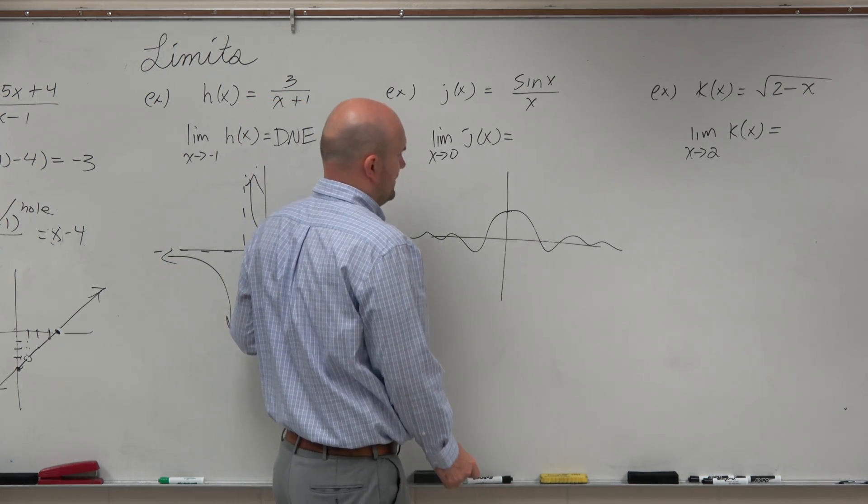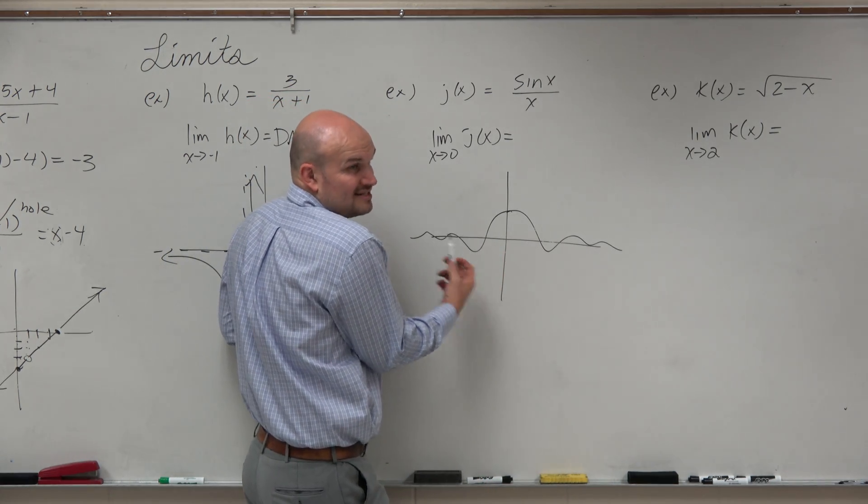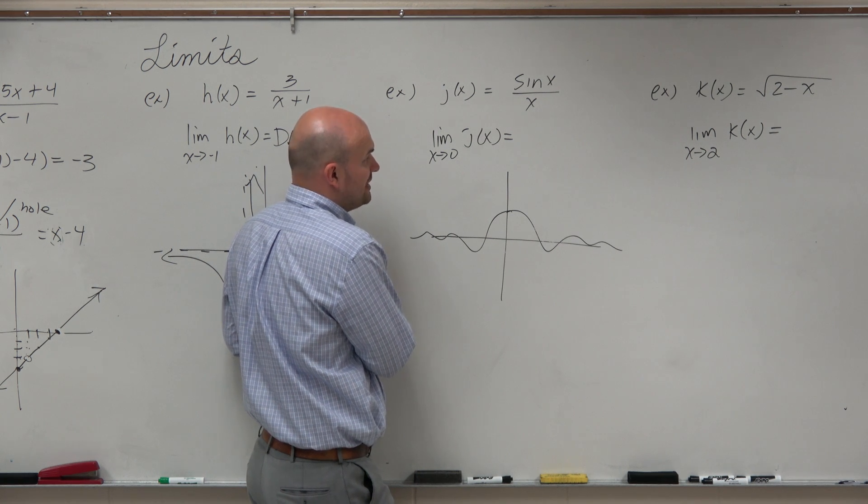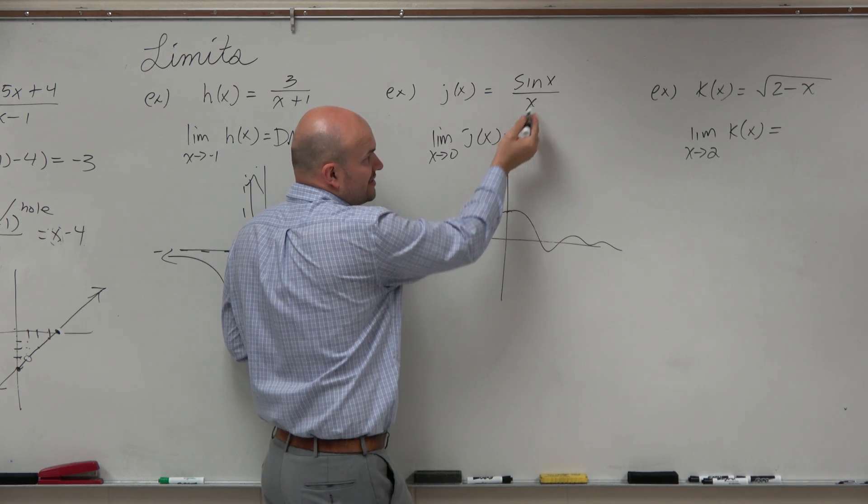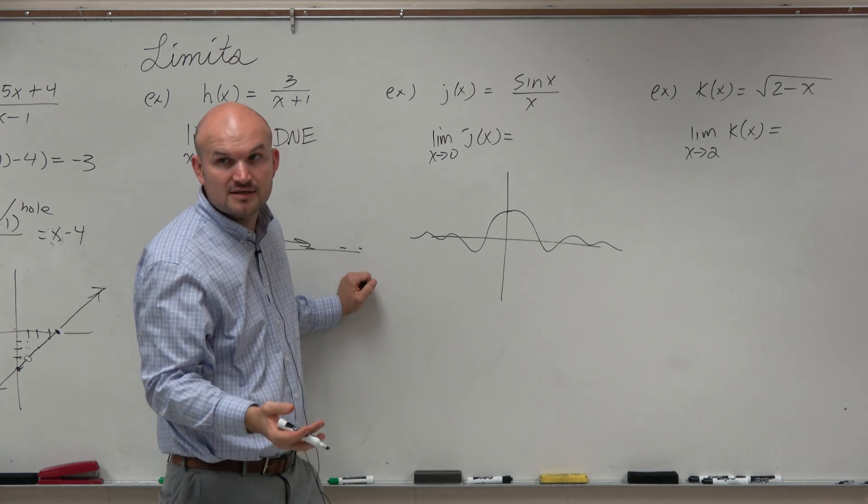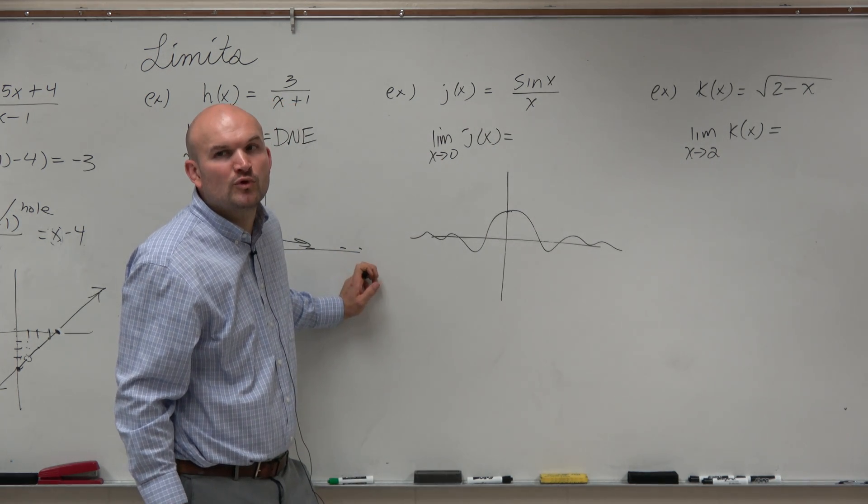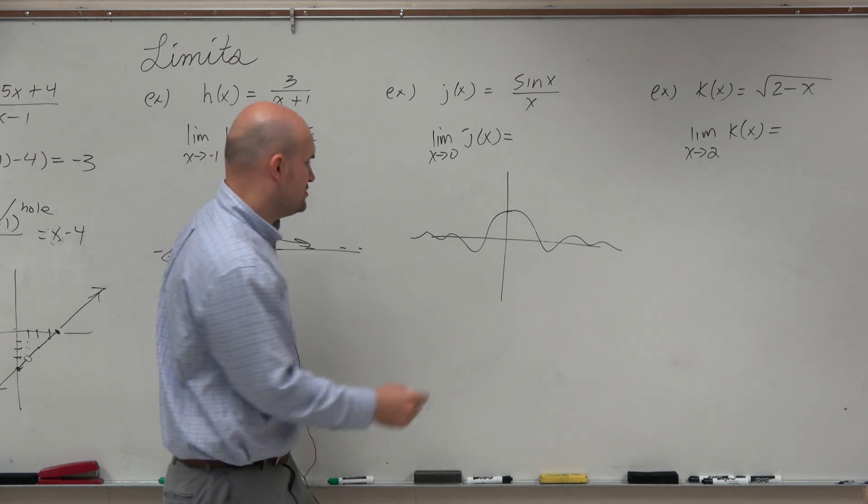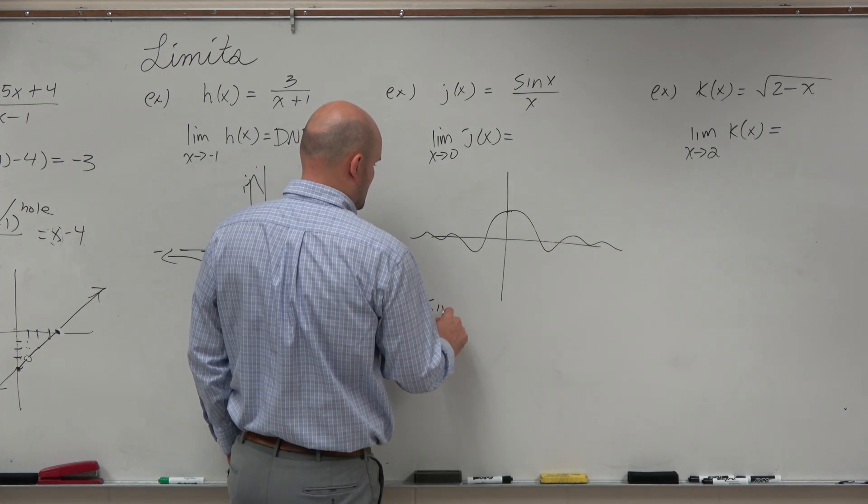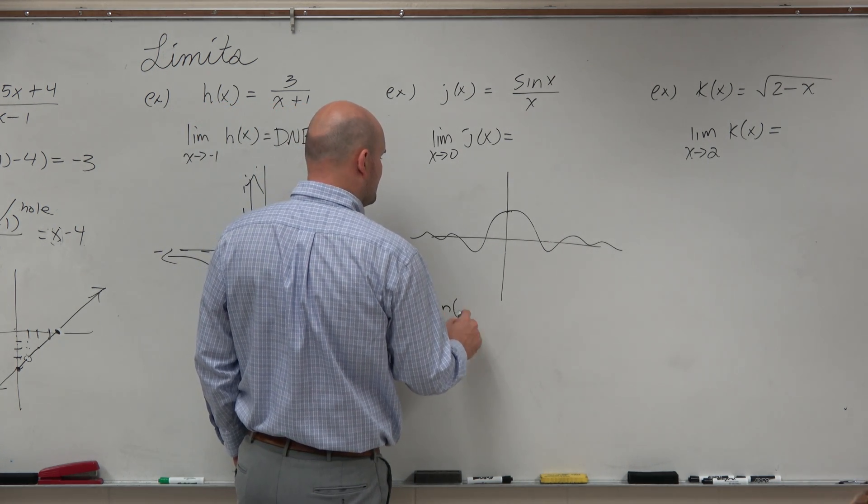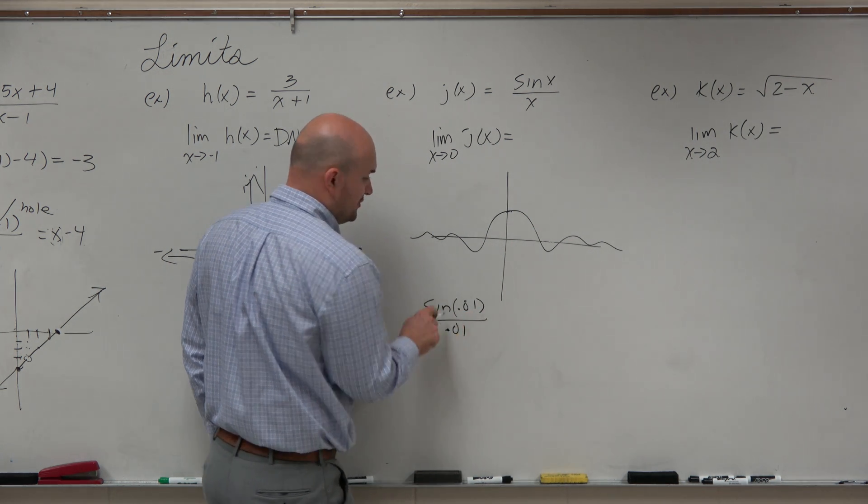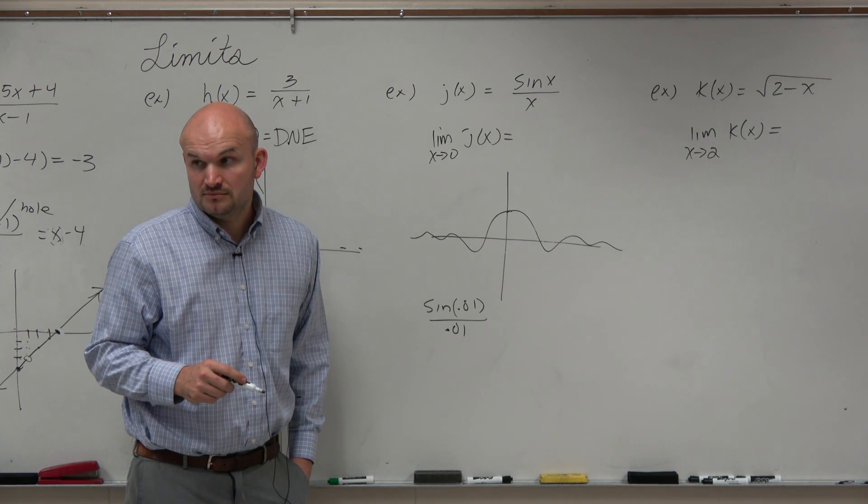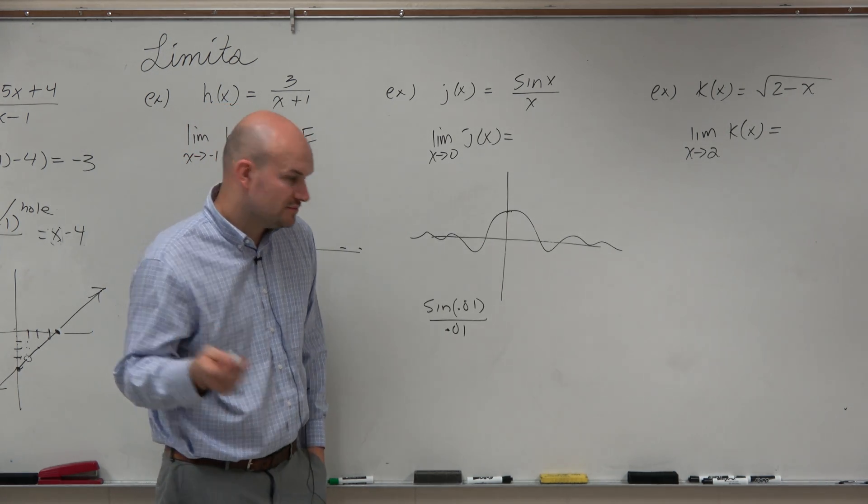Here's at least what I would recommend doing. You're going to need at least a scientific calculator. What I would recommend doing is we need to figure out what the value is at 0. We can't apply 0 as direct substitution, right? So why don't we just pick numbers that are really, really close to 0? So why don't we just do sine of 0.01 over 0.01. Can you divide by 0.01? Yeah, right? Fine.